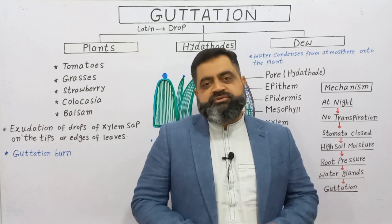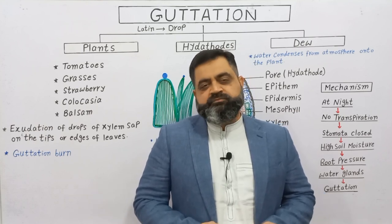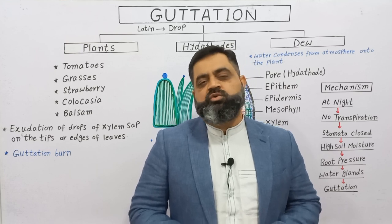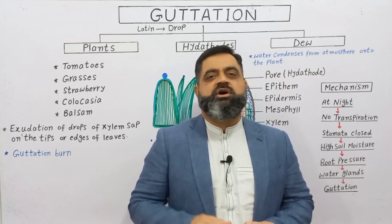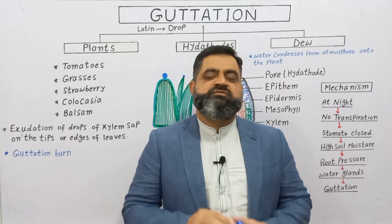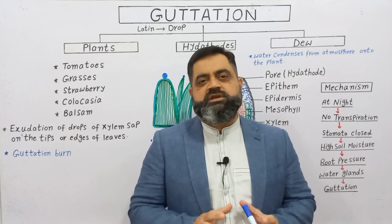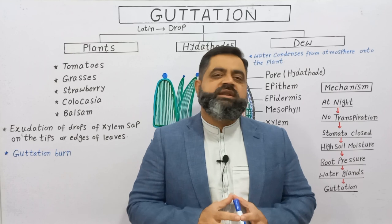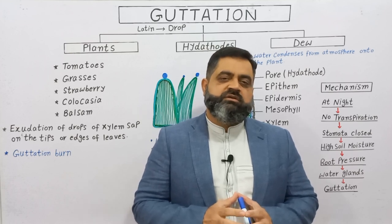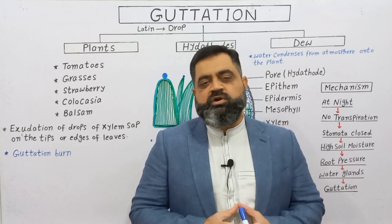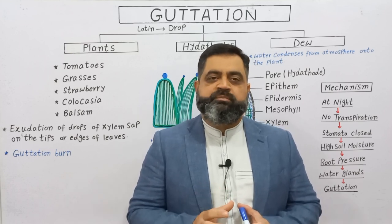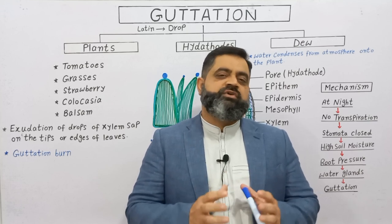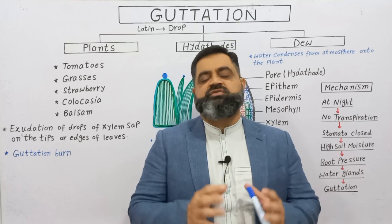Hello to all students. In this video lecture we are going to describe the phenomena of guttation, which usually takes place in small plants. If we look at the literal meaning, 'gutta' is a Latin word which means 'drop,' so it is a process in which drops of water are excluded from the tips or margins of some plants.